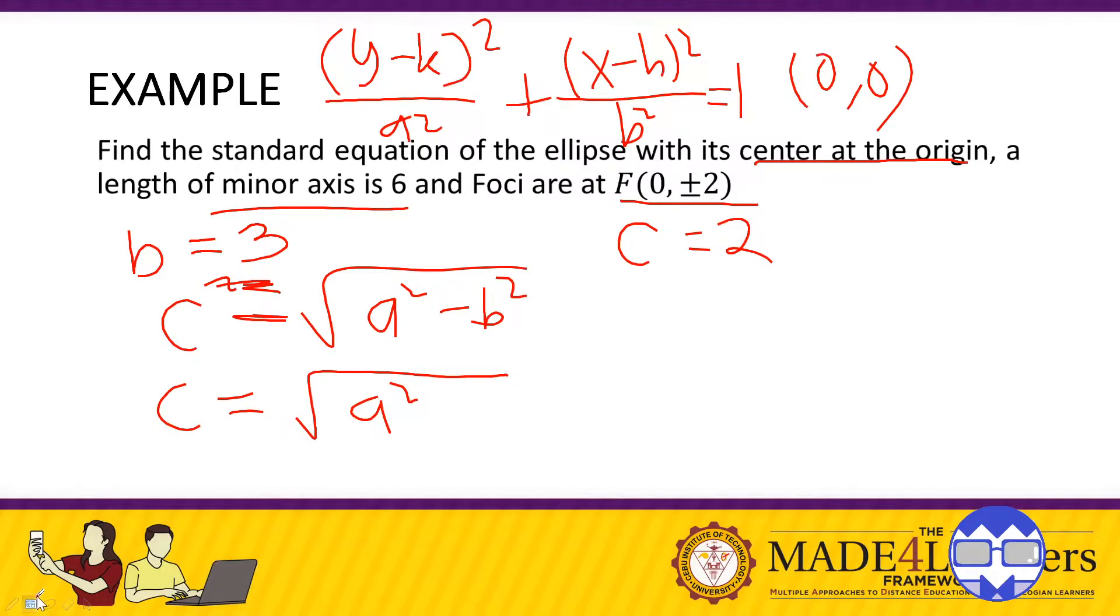Then using substitution, so we have C equals square root of A squared. Sorry, this is not A. This is not C. This is not C. Okay, so this is already, what is our C? 2. A squared and B squared is 9.